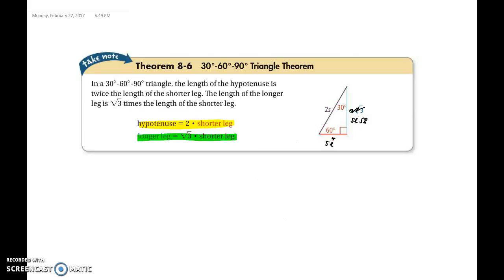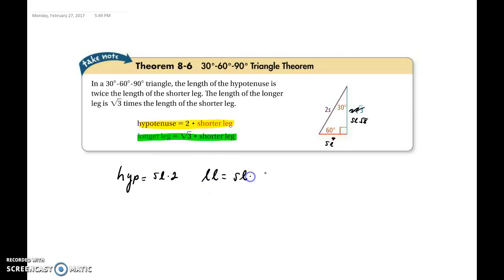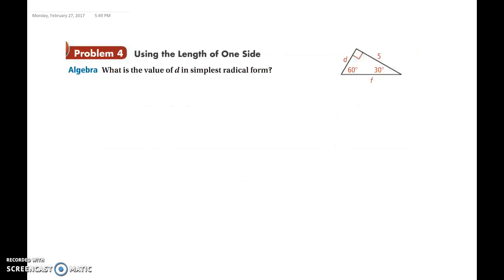So these are two formulas that you will have to remember and write out: hypotenuse is equal to your shorter leg times 2, and your longer leg is equal to your shorter leg times the square root of 3. Now let's go ahead and solve a problem with this. What is the value of D in simplest radical form?